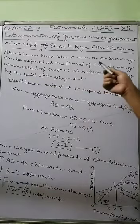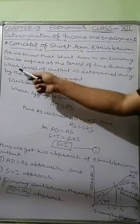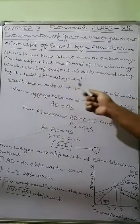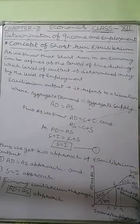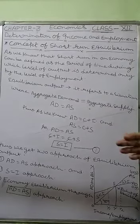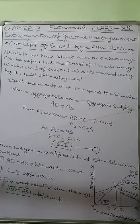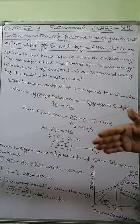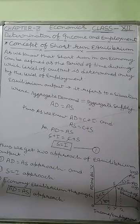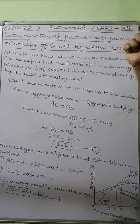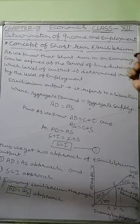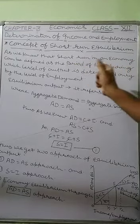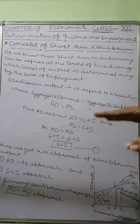In macroeconomics, the short-term can be defined as the period of time during which the level of output is determined only by the level of employment. Strictly speaking, there is no true equilibrium in macroeconomics, as factors are so interdependent that equilibrium between two variables at a certain point of time is practically impossible. But equilibrium can be considered for a short period — at a moment in time — and in this chapter we describe that short period.